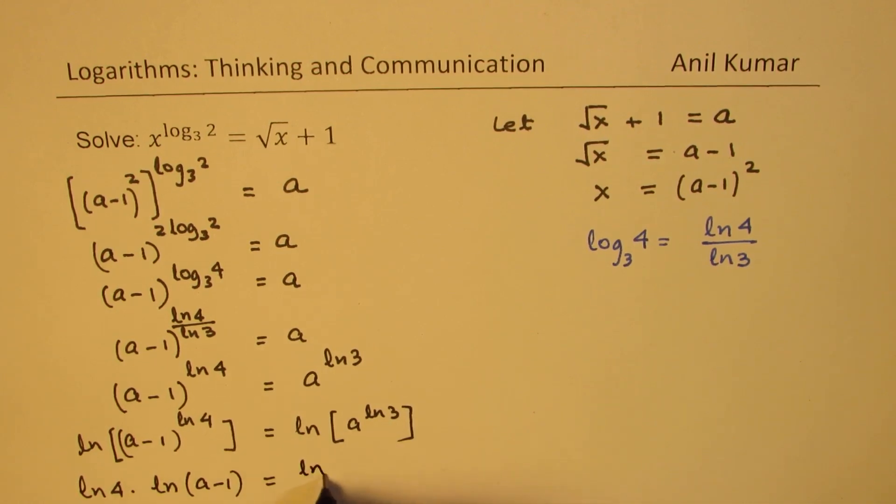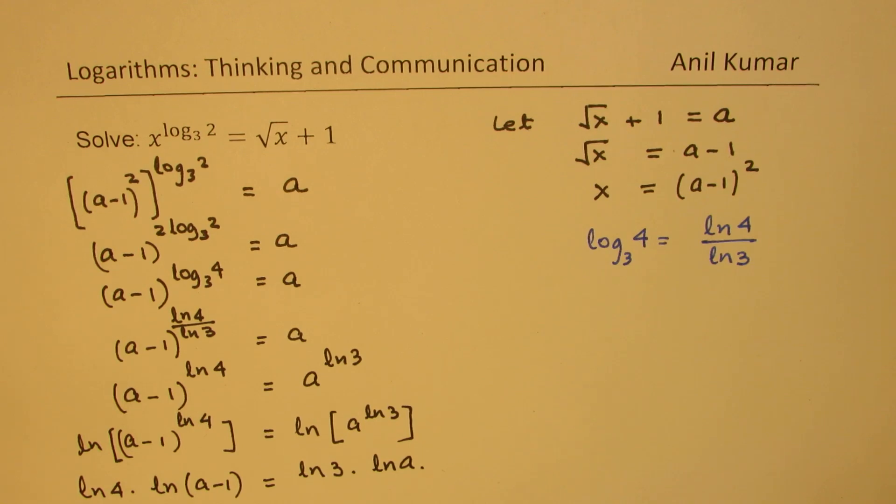Using the logarithmic rules once again we can write this as ln 4 times ln a minus 1 equals ln 3 times ln a. Now if you look at this equation, clearly we can conclude that if this equation is true, then we can equate ln a with ln 4 and ln 3 with ln a minus 1.